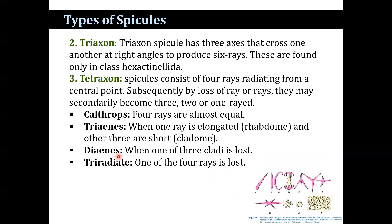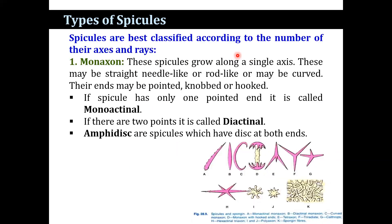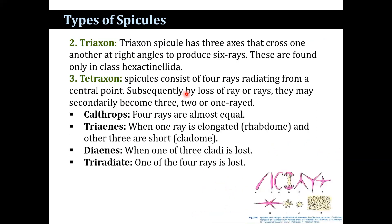Triaxon spicules have three axes that cross one another at right angles to produce six rays. Triaxon spicules consist of four rays radiating from the central point, and subsequently by loss of rays they may secondarily become three, two, or one ray.